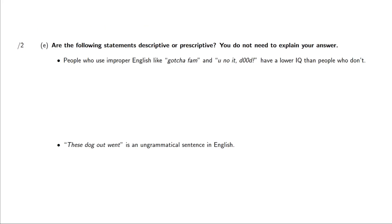Okay, in E, descriptive or prescriptive statements. We don't need to explain our answers here. People who use improper English, like gotcha fam and you know it, dude, have a lower IQ than people who don't. Well, here we have the word improper. This is like a prescriptive statement because improper is subjective. It's relative to some standard of English, even though we know that there is no real standard of English because there's so many different dialects. So words like improper, proper, bad, good, weird, these are all words that are very prescriptive in nature or very judgmental in nature, which lead the statements to become prescriptive.